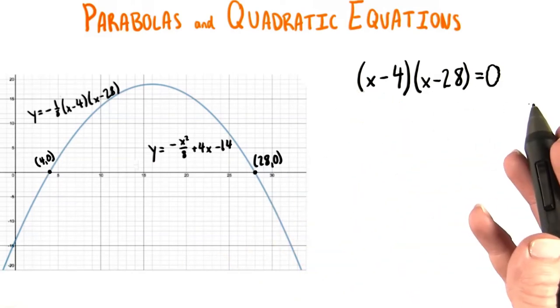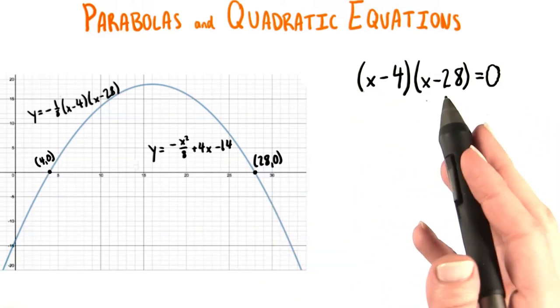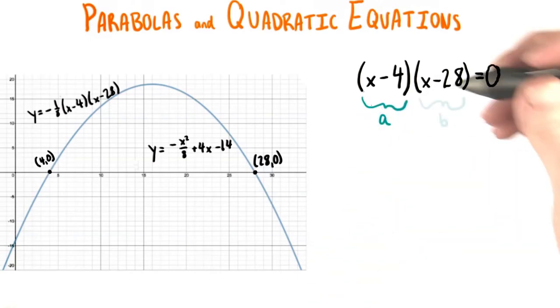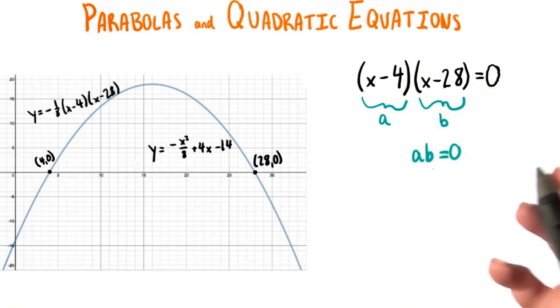Let's think about what we can deduce at this point. We have two factors that, when multiplied together, give us 0. Let's call one of them a, and the other one b. Then we can write this equation as ab equals 0.